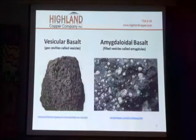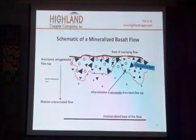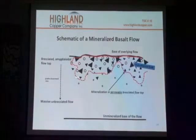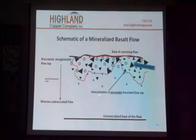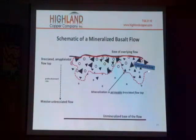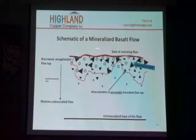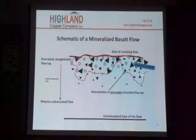Consequently, this is what we have in the Keweenaw. And if you look at a cross section, with this being the top of the formation, this is the denser part of the flow. The triangles represent the fragments and the circles represent the vesicles. This is the permeable part of the flow, and the hydrothermal mineralizing solutions come into that upper portion of the flow, confined by the overlying flow which is dense, and deposit copper.